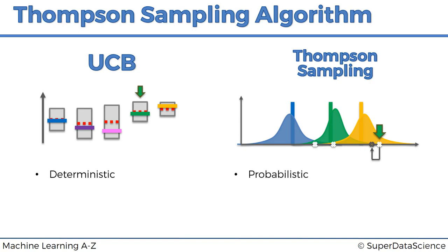On the other hand, the Thompson sampling algorithm is a probabilistic algorithm because in the algorithm itself, it has these distributions which represent our perception of the world and where we think the actual expected returns of each of those machines might lie. Therefore, every time we are iterating in the Thompson sampling algorithm, we actually generate random values from those distributions. If you rerun a round in the UCB algorithm after receiving the previous value from the machine, it's always going to be the same result. Whereas in the Thompson sampling algorithm, after receiving the previous value, rerunning the current round is always going to be different because you're always sampling from your distributions.